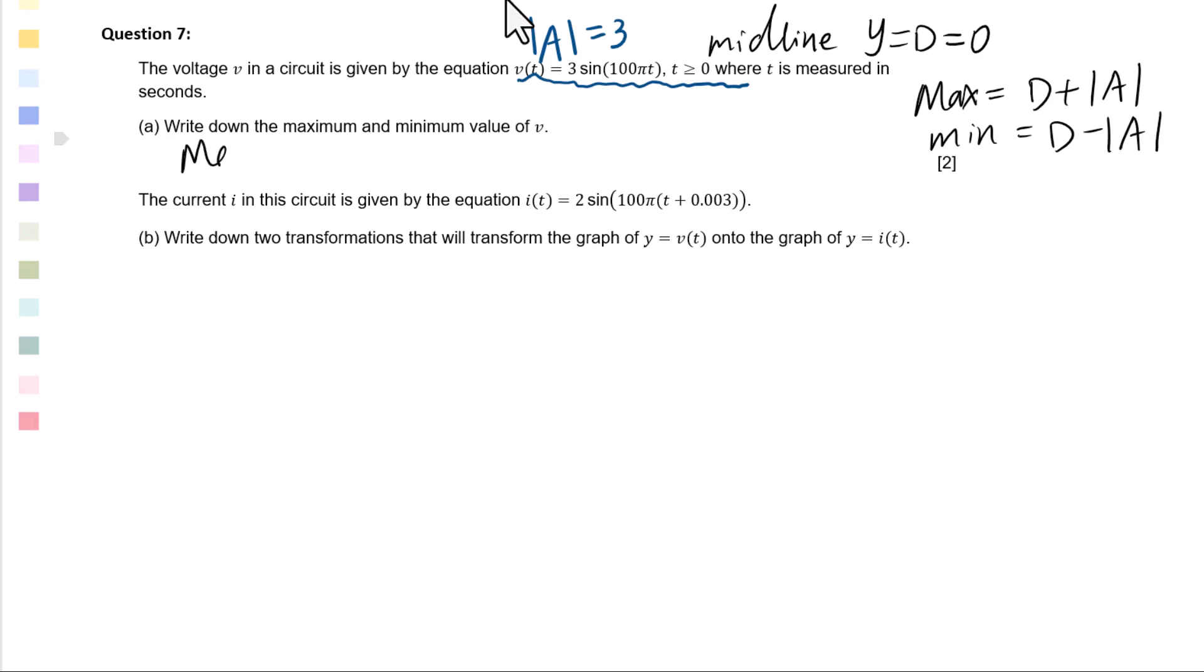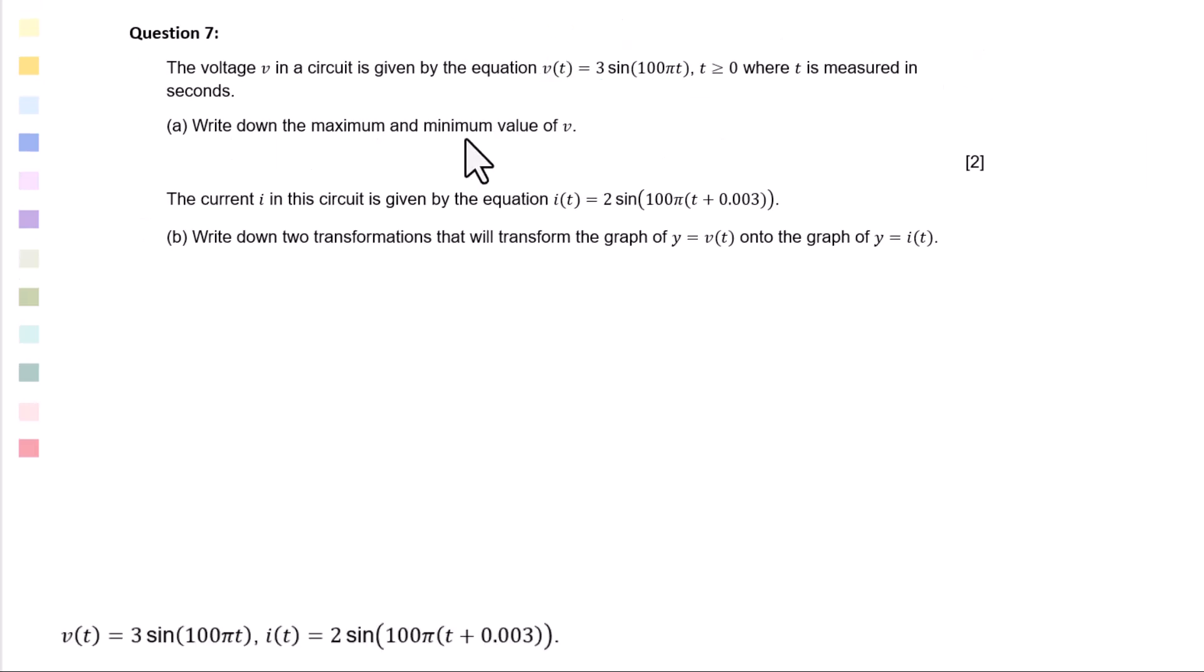Therefore, for maximum = 0 + 3 = 3. Minimum value = 0 - 3 = -3. Another way to figure out maximum and minimum, we will make a sin function into ±1 times 3. We will have maximum = 3 × 1 = 3. Minimum = 3 × -1 = -3.